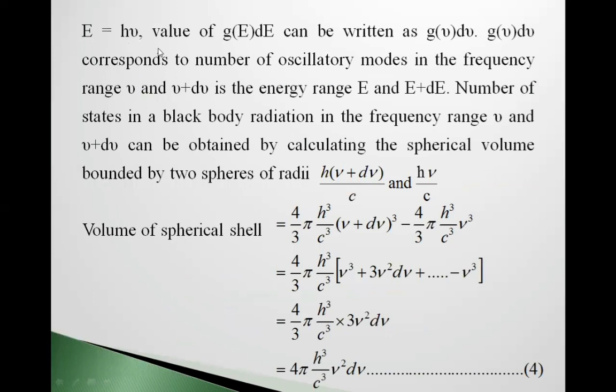Now, E equals h nu, where h is Planck constant, nu is frequency. The value of g(E)dE can be written as g(nu)d(nu). And g(nu)d(nu) corresponds to number of oscillatory modes in the frequency range nu and nu plus d nu. Number of states in black body radiation in this frequency range can be obtained by calculating the spherical volume bounded by two spheres of radii h nu plus d nu upon c and h nu upon c.